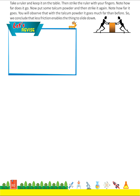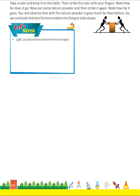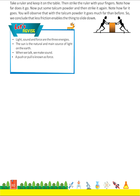Let's revise. Light, sound and force are the three energies. The sun is the natural and main source of light on the earth. When we talk, we make sound. A push or pull is known as force. Force is not something you can see or touch, but you can see it in action. Friction stops moving objects.